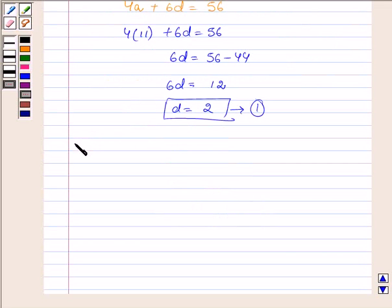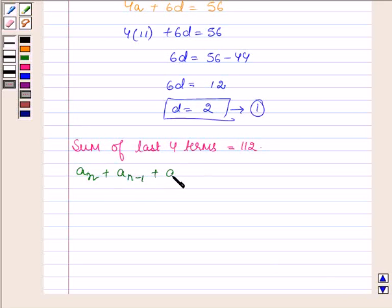Now also we are given that sum of last four terms is equal to 112. So let the four terms be An plus An minus 1 plus An minus 2 plus An minus 3 from the last. So their sum is equal to 112.